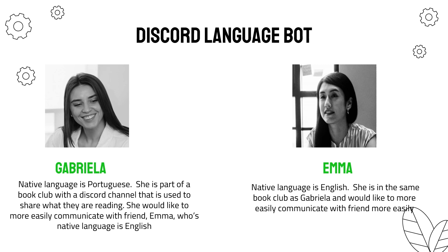In this tutorial, we're going to build a Discord language bot that gives Gabriella the ability to type her message in Portuguese and have it translate into English. Conversely, the bot will give Emma the ability to type her message in English and have it translated into Portuguese.